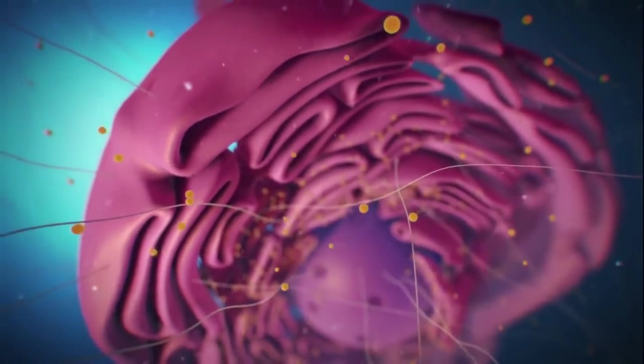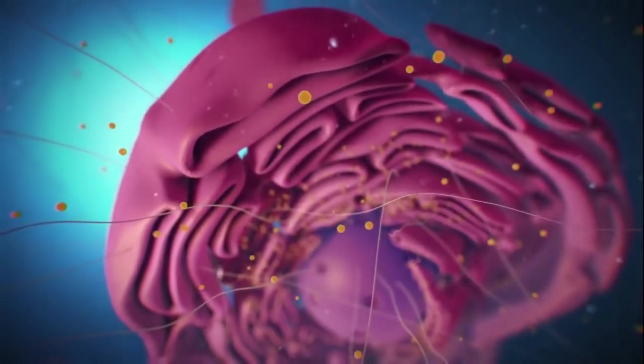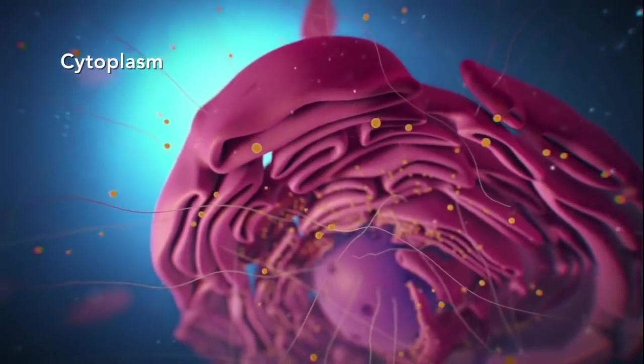Outside the nucleus, the ribosomes and the rest of the organelles float around in cytoplasm, which is the jelly-like substance.